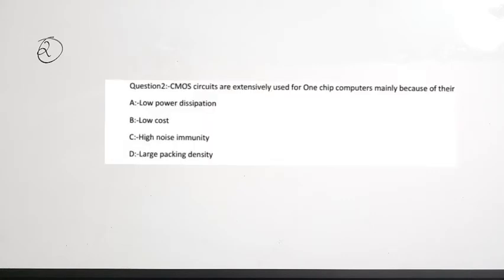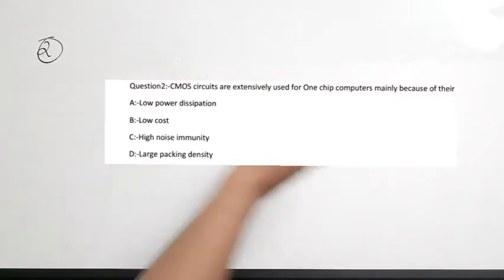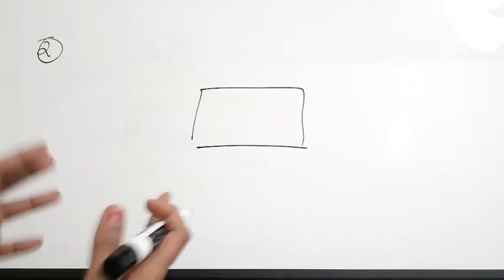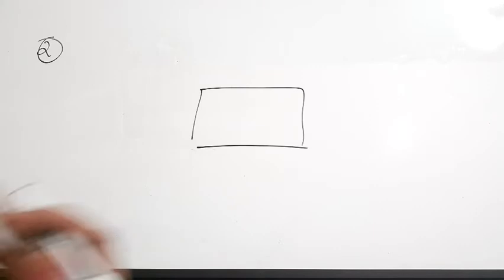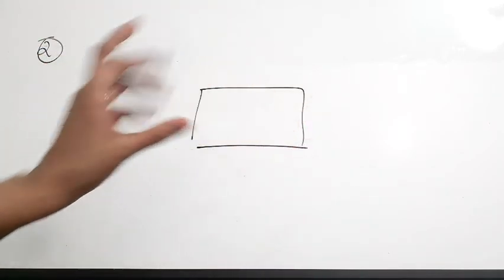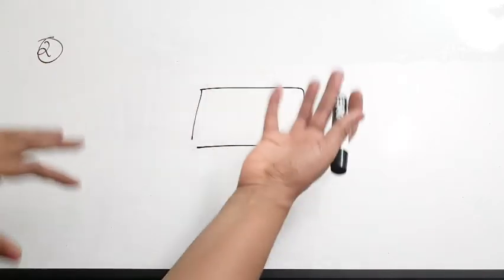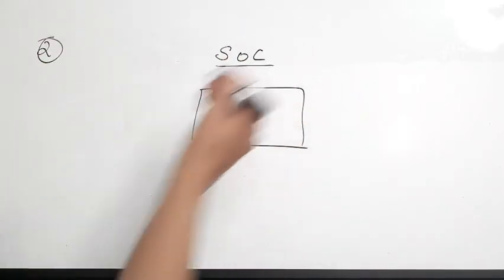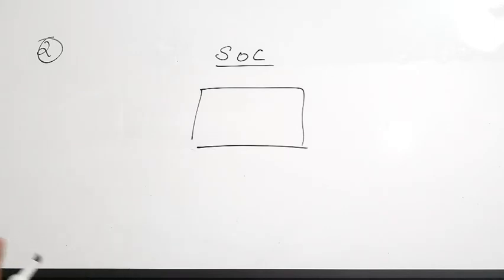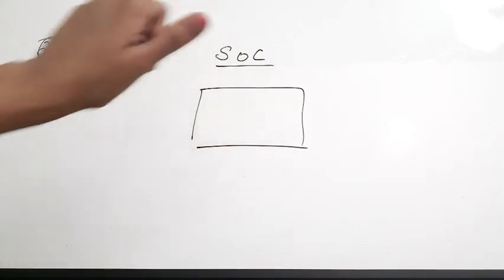The second question: CMOS circuits are extensively used for one-chip computers mainly because of their — options are low power dissipation, low cost, high noise immunity, or large packing density. A one-chip computer keeps all elements on a single chip. CMOS circuits are used because of their large packaging density, which allows all components to be accommodated on a single chip. This concept led to the evolution of System on Chip, or SOC.